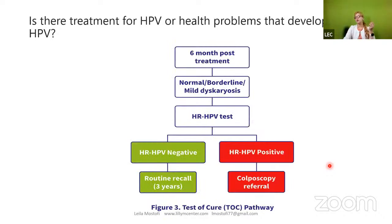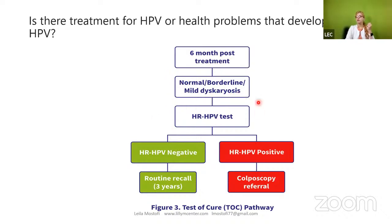Is there any treatment for HPV or health problems that develop from HPV? There is one protocol: after six months post-treatment, they should come back. With normal borderline and mild dysplasia, we will do an HR-HPV test again. If the HR-HPV test is negative, we go for routine recall after three years. If HR-HPV is positive, we go for colposcopy and referral.